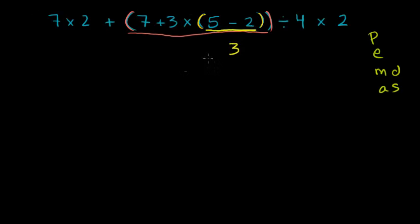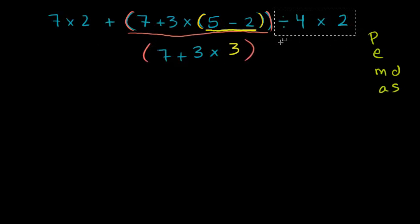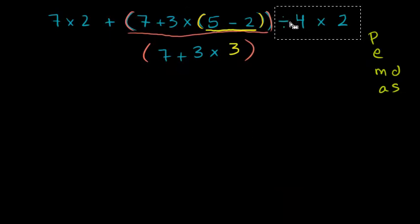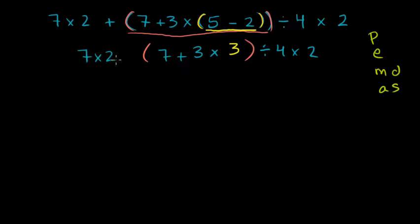5 minus 2 is 3. So this simplifies to — I'll do it step by step — 7 plus 3 times 3, all in parentheses, with the divided by 4 times 2 on the right side and the 7 times 2 plus the orange parentheses on the left side. At any step, we always want to do parentheses first, and we keep doing this until there are no parentheses left. So we have to evaluate the orange parentheses, and looking inside it we have 7 plus 3 times 3.